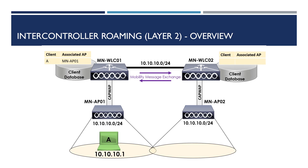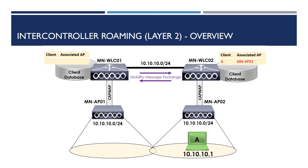Next, let's look at inter-controller roaming layer two. This roaming event occurs when a client roams between access points associated to two different controllers. For the roam to be classed as layer two inter-controller roaming, both controllers must have an interface in the client's subnet. In our example, AP01 is associated to WLC01 and AP02 is associated to WLC02. Both controllers are located within the same network, 10.10.10.0/24. Client A is associated to AP01 with an IP address of 10.10.10.1. Both controllers each maintain a client database used to know how to reach the clients.